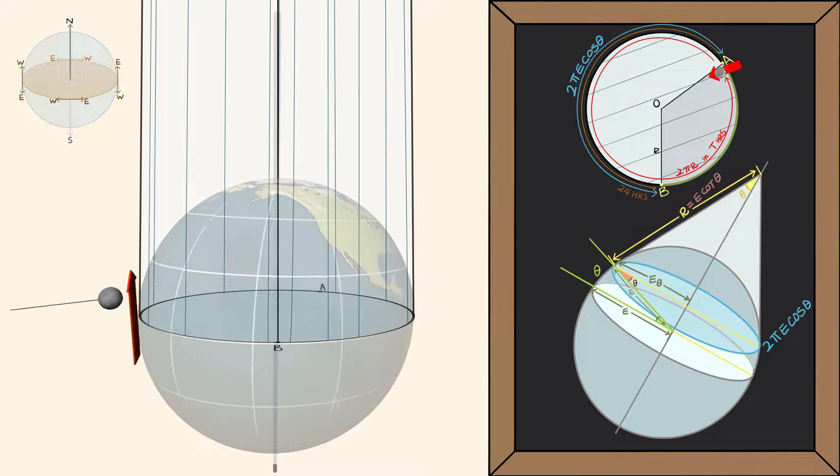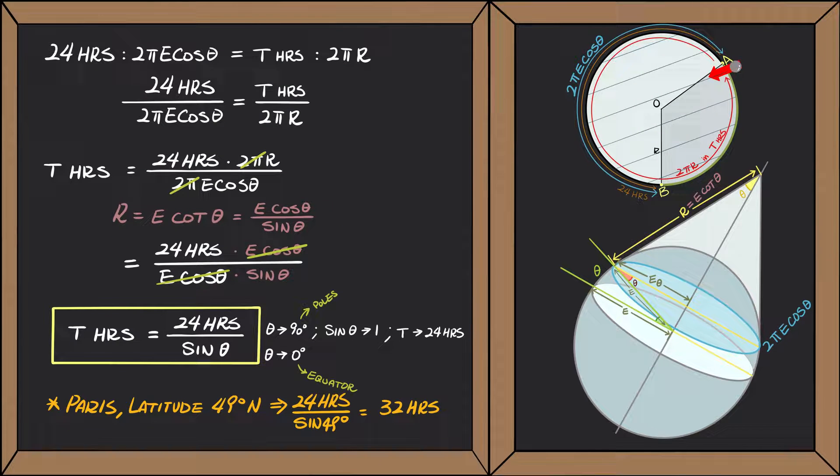In fact, if you look at the equation above, as theta gets closer to 0 degrees, the value of sine also gets closer to 0, and the time needed for one rotation becomes infinitely long. In other words, it doesn't turn at all.